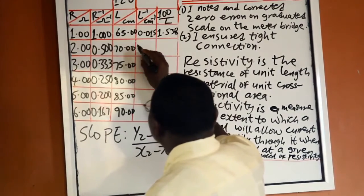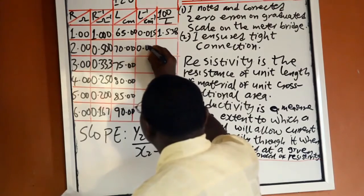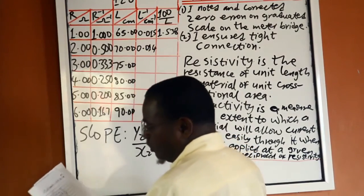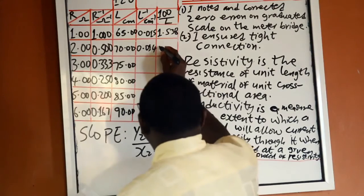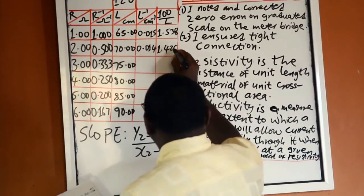And 1 over 70 is equal to 0.014. 100 over 70 is equal to 1.429.